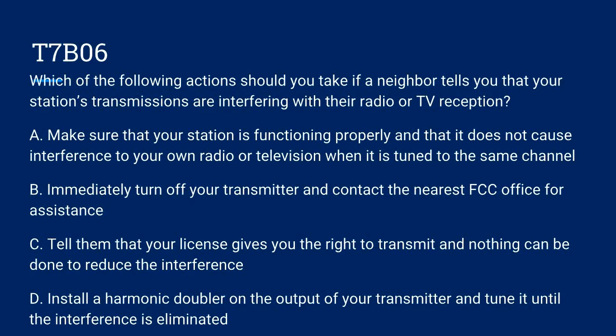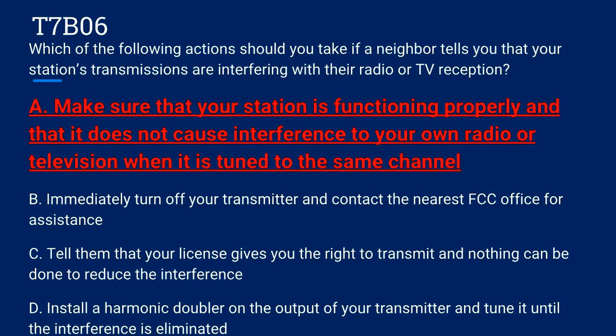T7B06. Which of the following actions should you take if your neighbor tells you that your station's transmissions are interfering with their radio or TV reception? A. Make sure that your station is functioning properly and that it does not cause interference to your own radio or TV when it is tuned to the same channel. B. Immediately turn off your transmitter and contact the nearest FCC office for assistance. C. Tell them that your license gives you the right to transmit and nothing can be done to reduce the interference. Or D. Install a harmonic doubler on the output of your transmitter and tune it until the interference is eliminated. The correct answer is A. Make sure your station is functioning properly and it does not cause interference to your own radio or television when it is tuned to the same channel.